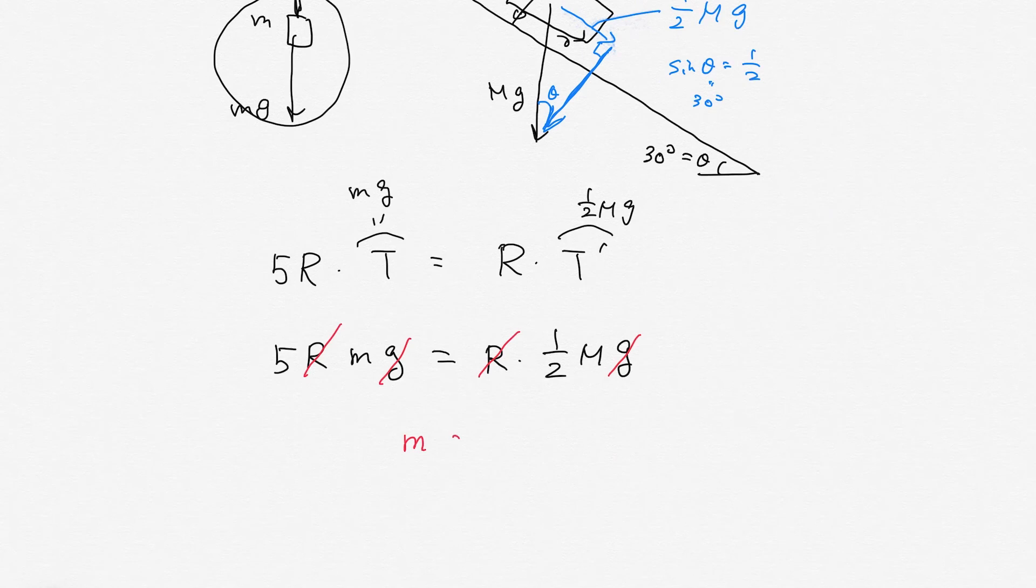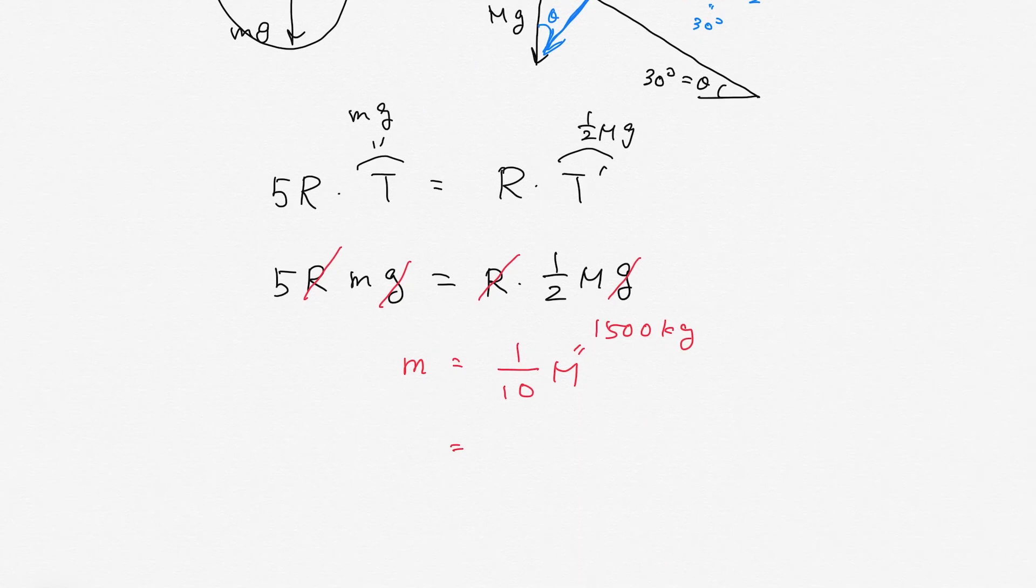Then from this equation, m is expressed as 1/10 capital M. Capital M is the mass of the car, 1,500 kg. Then you can substitute, it becomes lower case m is 150 kg. This is the answer to this question.